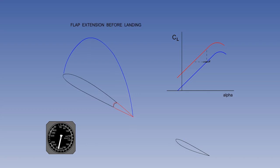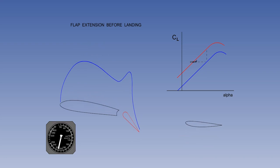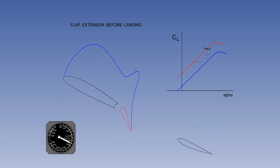When considering flap extension prior to landing, we can use the same principle of trading indicated airspeed and angle of attack to keep lift the same as the weight. As the flaps extend, the pilot must decrease the angle of attack. Please note that to maintain level flight at a constant indicated airspeed as the flaps extend, the lift coefficient must remain constant. With the aircraft now on the flaps-down lift curve, the pilot can decrease the indicated airspeed while increasing the angle of attack to keep lift the same as the weight.